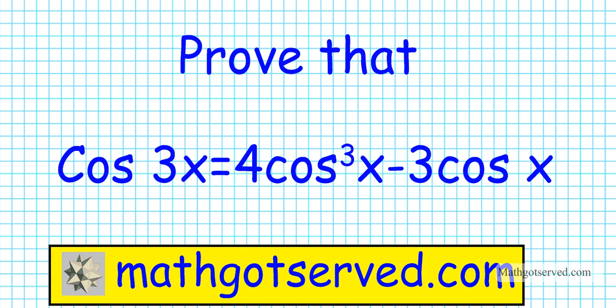Good day students. In this clip we're going to be going over trigonometric proofs. We're going to show that this identity is true — we're going to prove that cosine 3x is equal to 4 cosine to the third x minus 3 cosine x. Before we get started, we're going to take a look at some key identities that I'll be making use of in this proof.